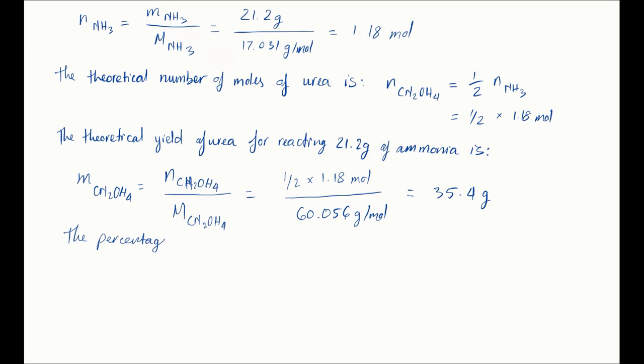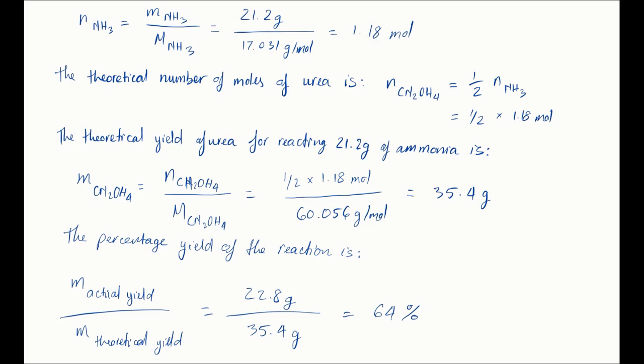So the percentage yield is equal to the mass of the measured collected urea which is 22.8 grams divided by the theoretical mass of urea which is 35.4 grams. Multiply that ratio by 100% and will give you 64%. And it is a rule that you always round your percentage yield to the whole number. So you got your percentage yield of that process which is 64%.